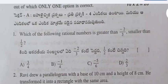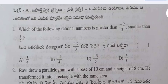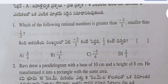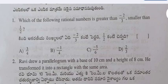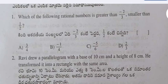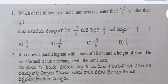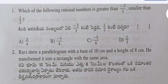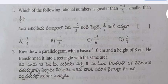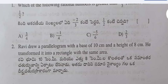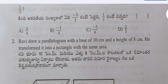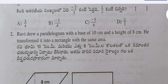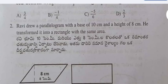Question 1: Which of the following rational numbers is greater than minus 2 by 3 and smaller than 1 by 2? Answers are also given at the end of this video, so do not skip any part of this video — see till the end.